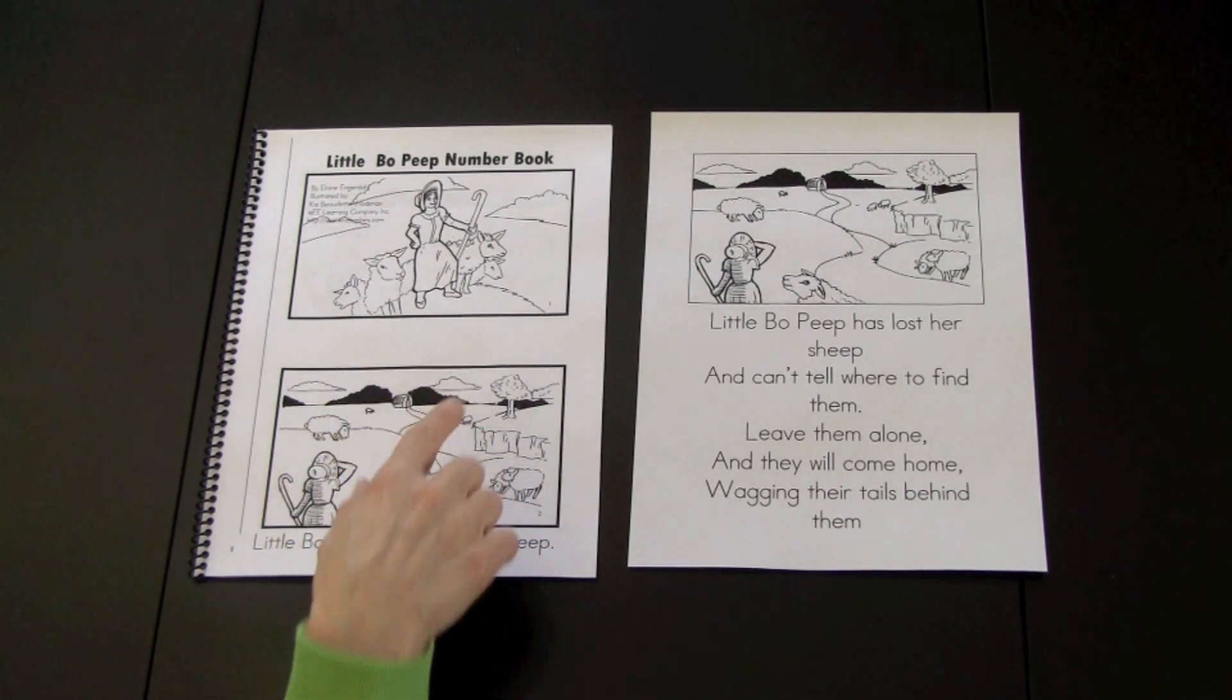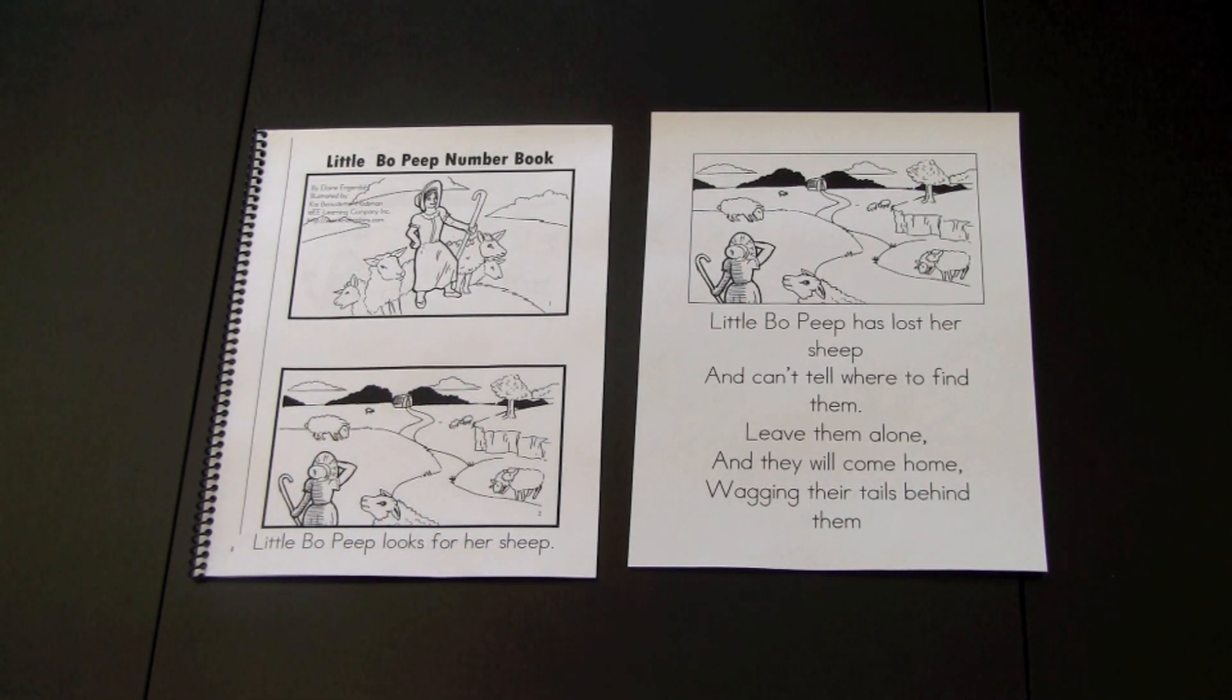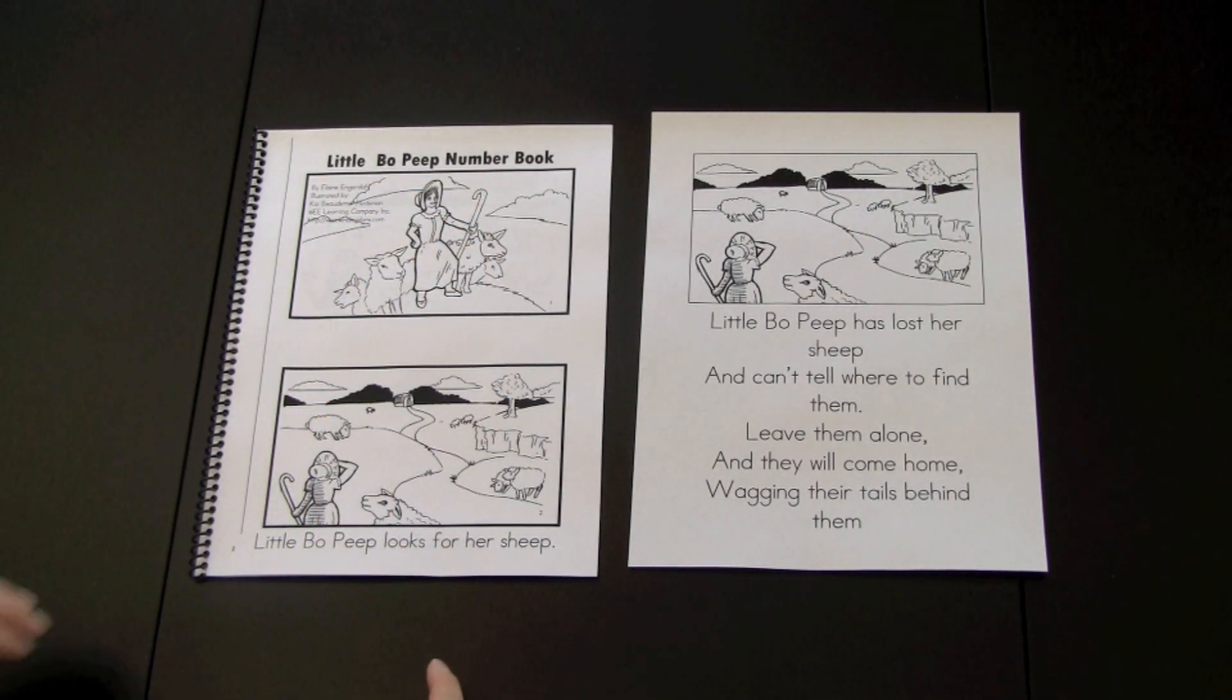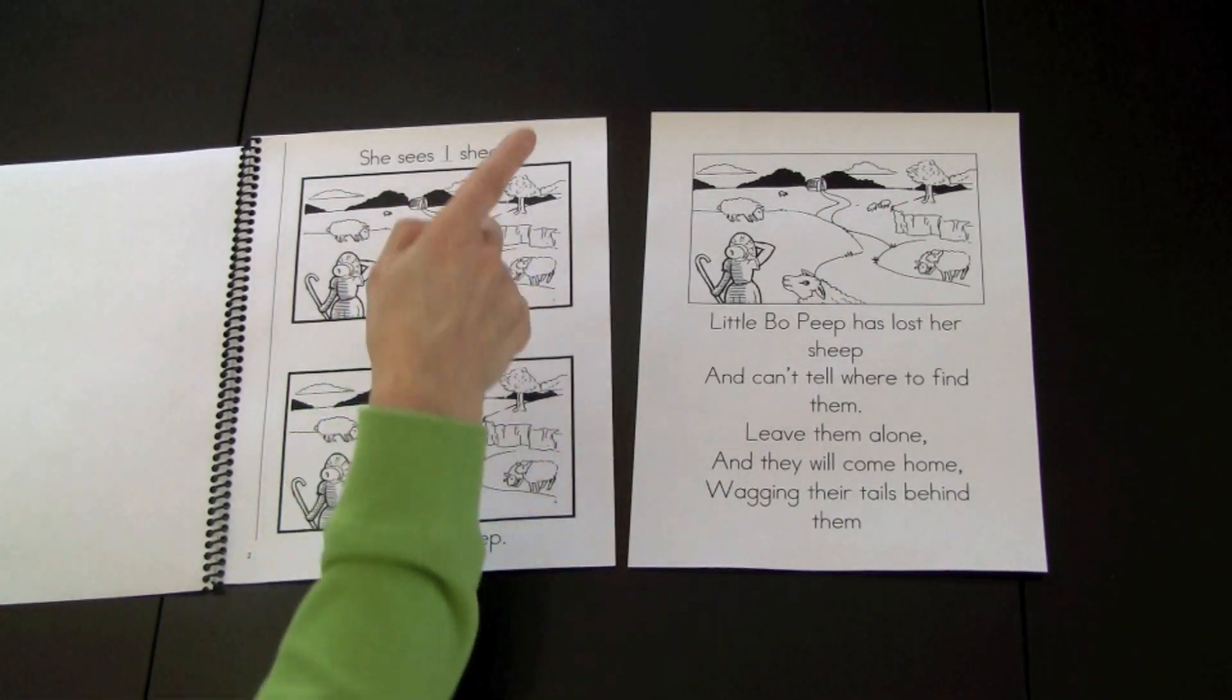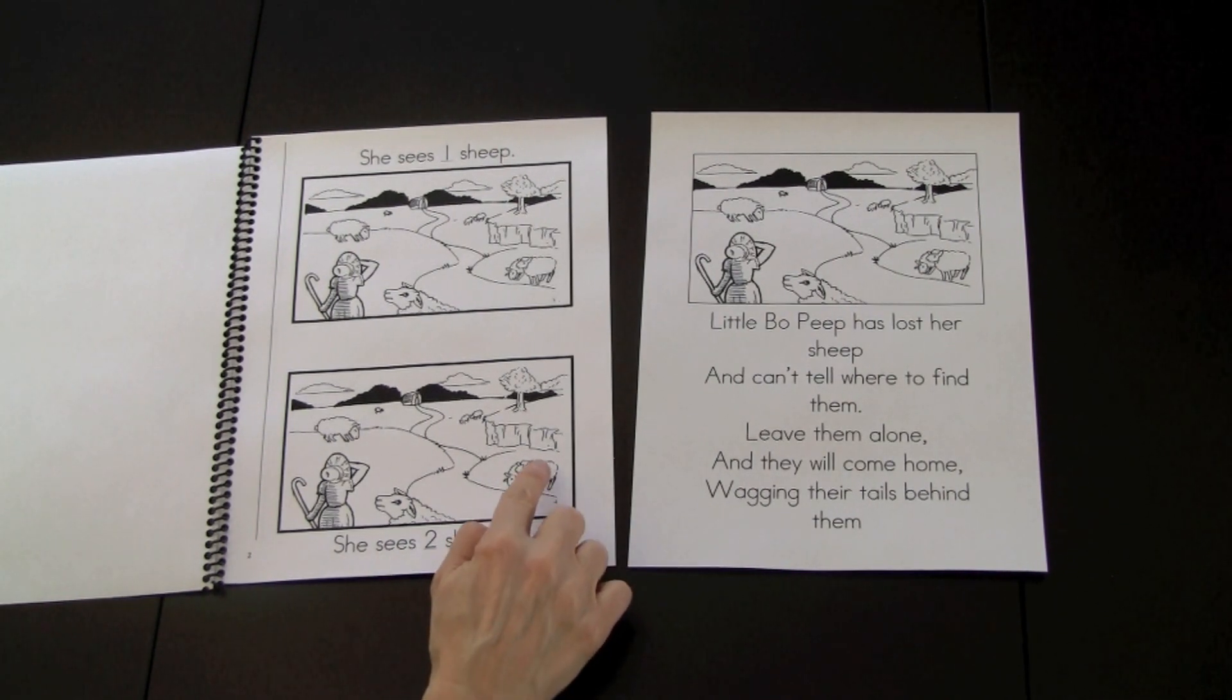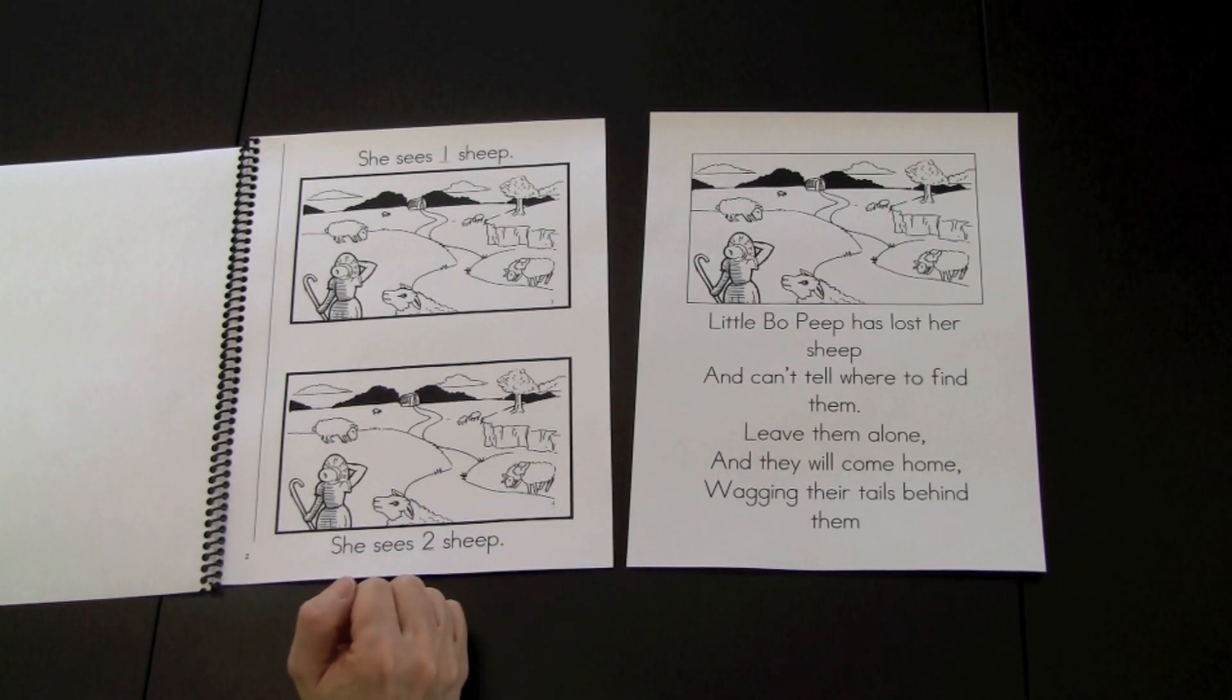I'm going to demonstrate the text of the reader and the interactive component. The book is called Little Bo Peep Number Book. Little Bo Peep looks after her sheep. She sees one sheep. The children would color one sheep. She sees two sheep. They would color another one making two. The book would continue with the text until it gets to number seven.